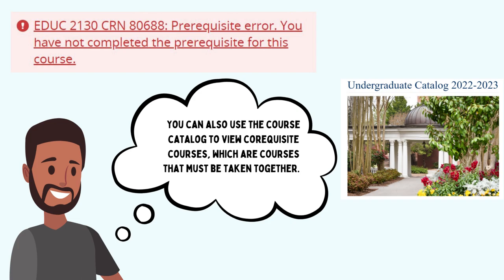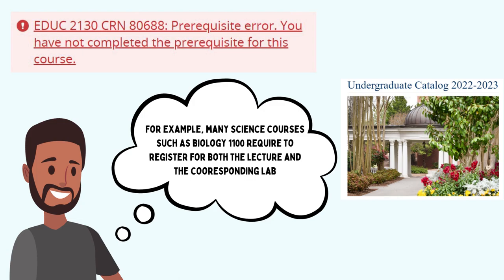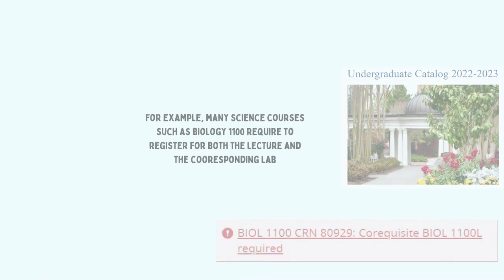You can also use the course catalog to view co-requisite courses, which are courses that must be taken together. For example, many science courses such as Biology 1100 require you to register for both the lecture and the corresponding lab, which would be Biology 1100L. If you receive a co-requisite error, refer to the catalog to determine which additional course is needed.